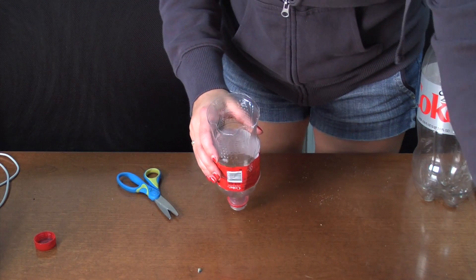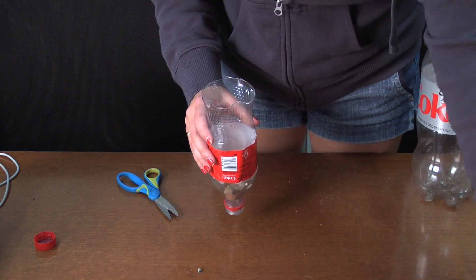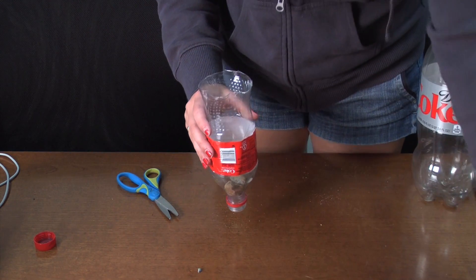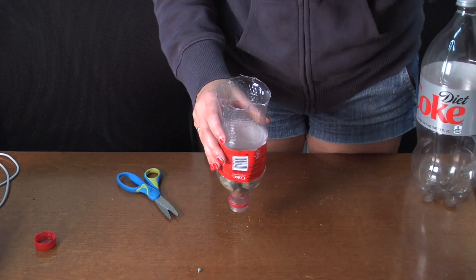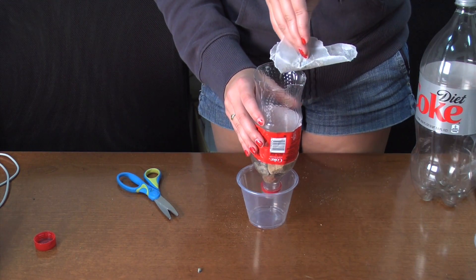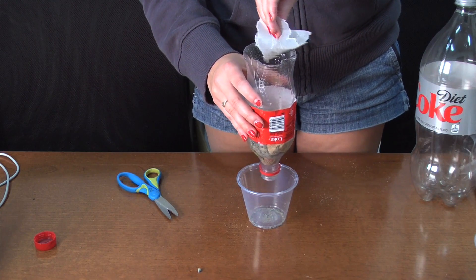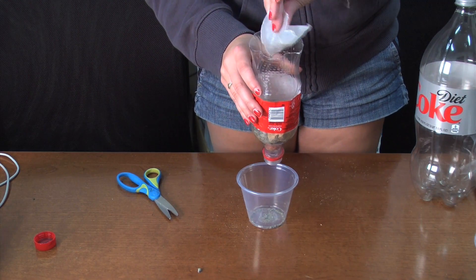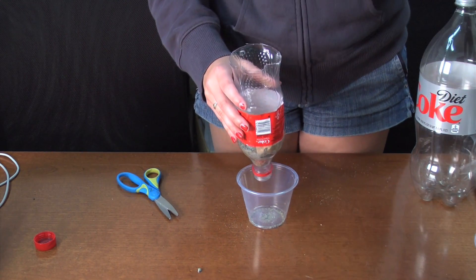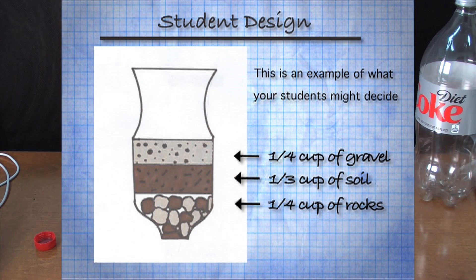Then, have the students place the larger stones into the bottle over the drain. Fill the bottle chamber with soil samples that will filter the water. Have the students design their own filter by choosing which materials and in which order to add them. Each group should record the order of materials and the quantities of each material.